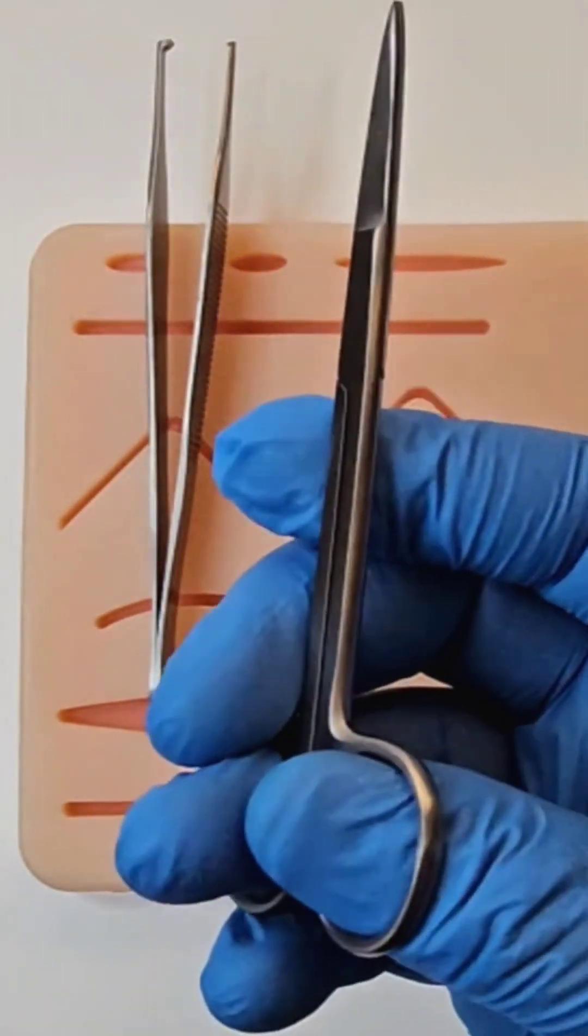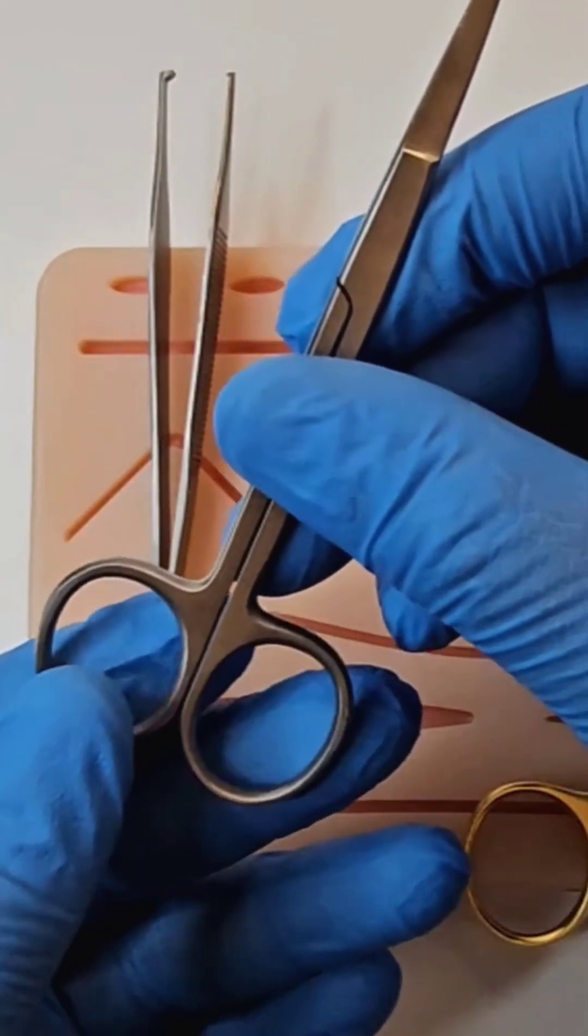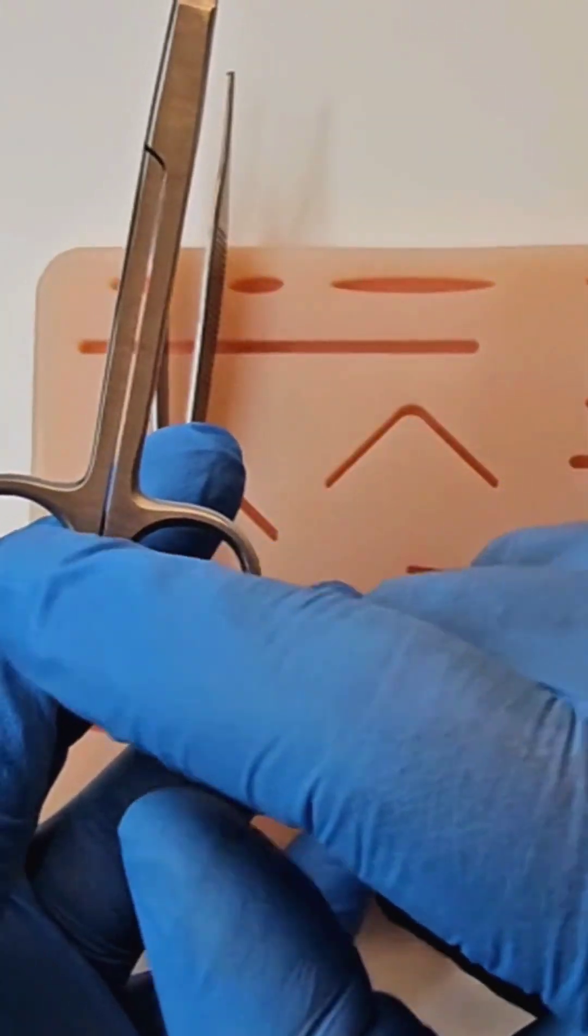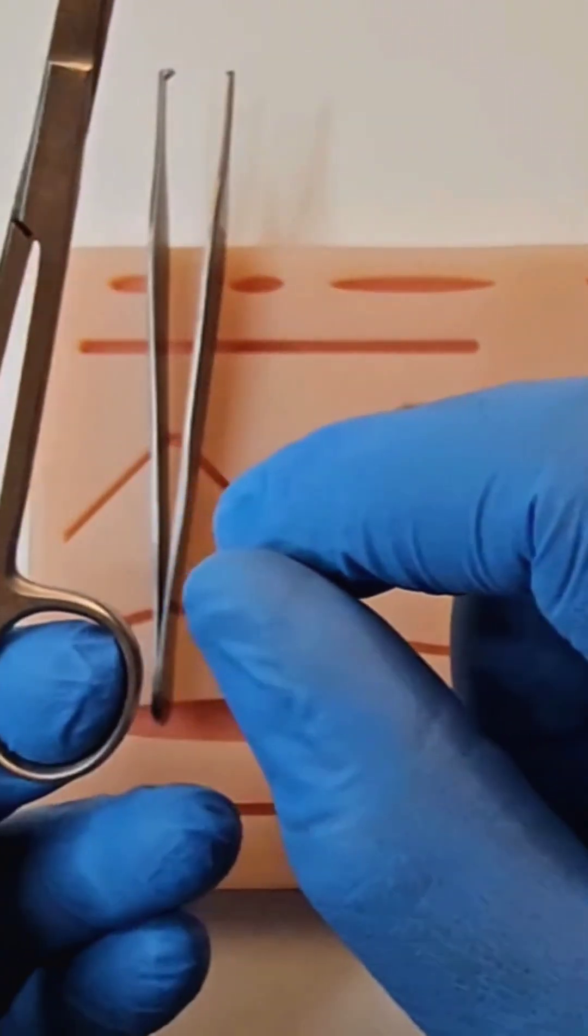So this is how you would hold it if you're cutting with your left hand. One ring is between your thumb and index, the middle finger is on...